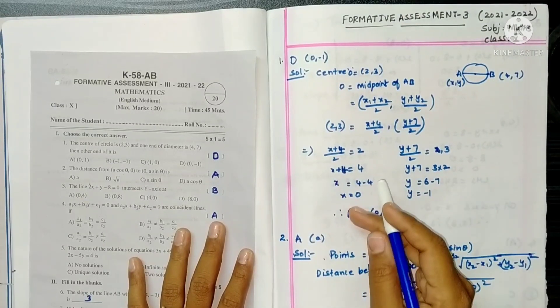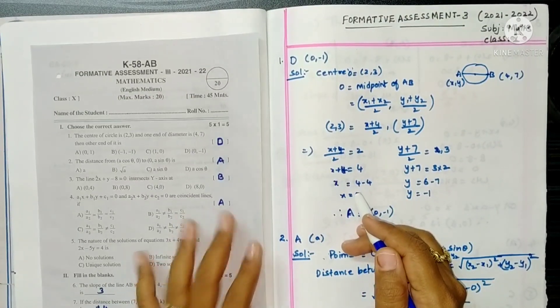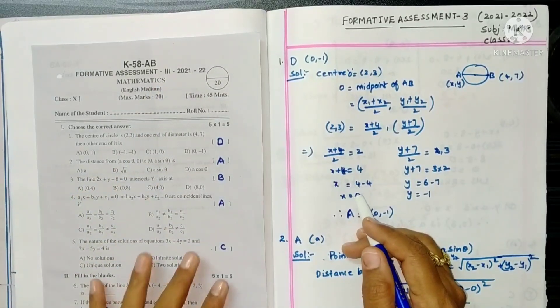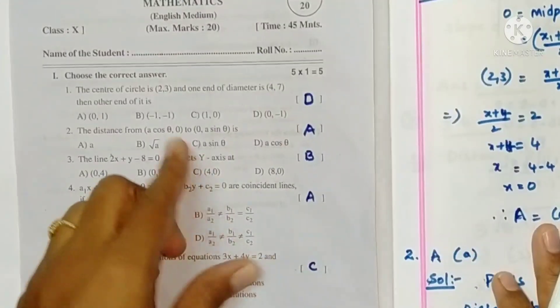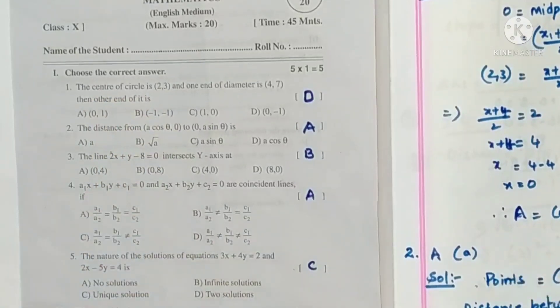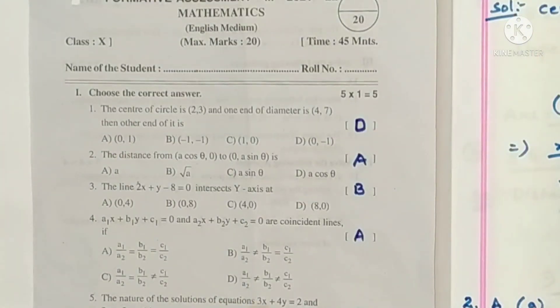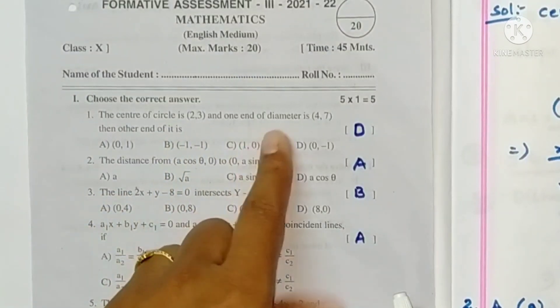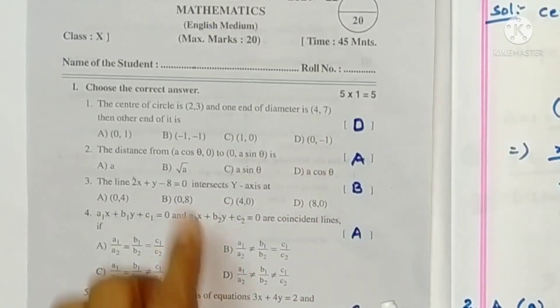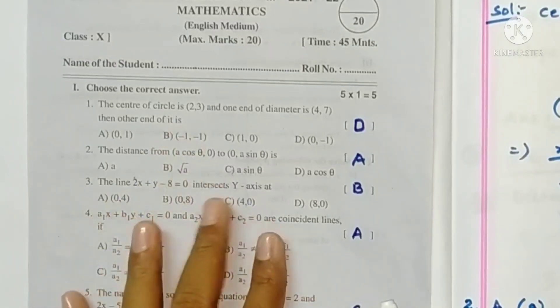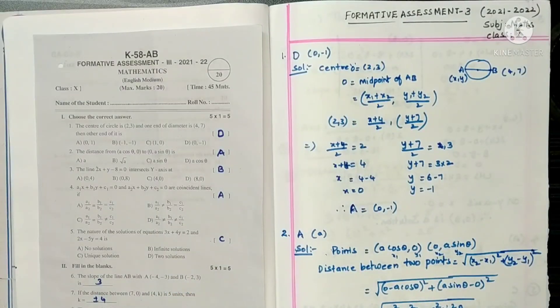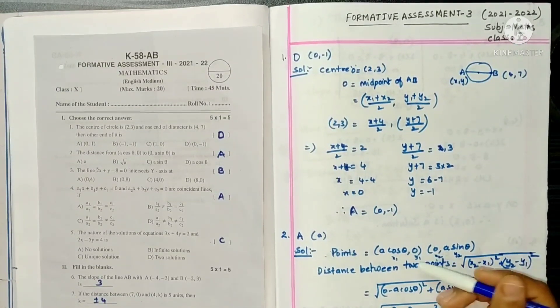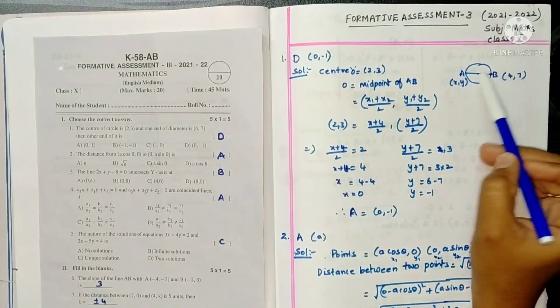Hello students, welcome to my channel. Today in this video we are going to see the solutions of FA3 10th class paper. First one, choose the correct answer. Five multiple choice questions are given. The center of circle is (2,3) and one end of the diameter is (4,7), then other end of it is - that is the question.